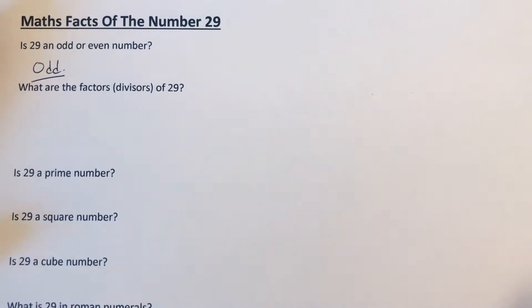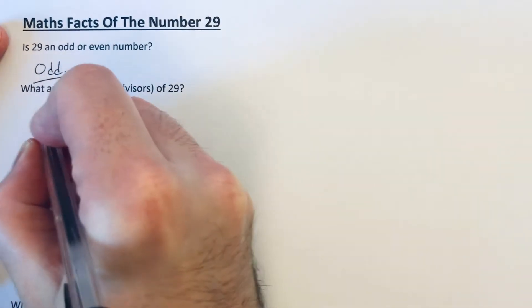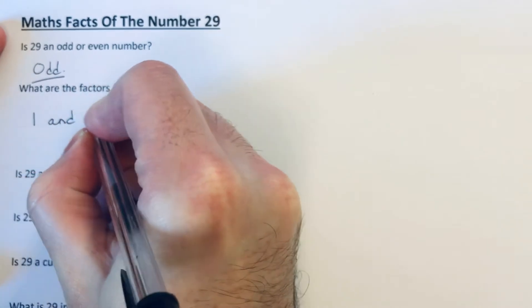What are the factors of 29? Well, the only two factors of 29 are 1 and 29.